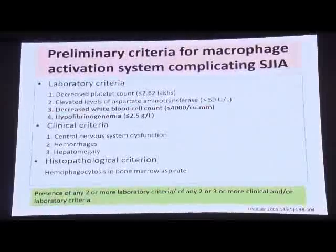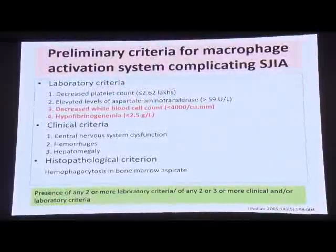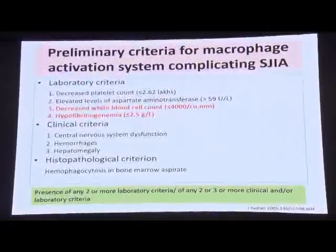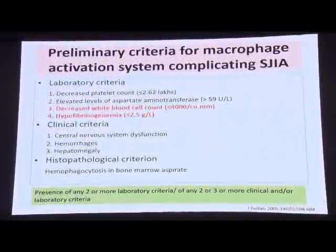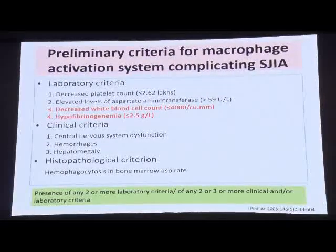However, even in this criteria, decreased white blood cell count less than 4,000 happens in a very advanced stage of MAS — if patients are only picked up at this stage, the outcome is poor. Also, hyperfibrinogenemia occurs in active stages of systemic JIA; when MAS develops, fibrinogen normalizes then reduces. It is the falling trend that must be recognized, not just very low values. Hypofibrinogenemia can also be seen in active systemic JIA alone, so this criteria was again criticized.